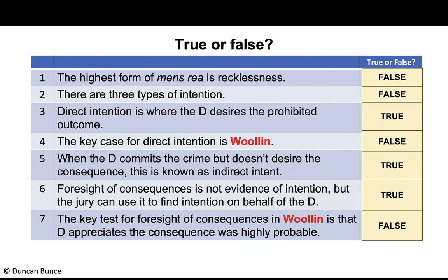If the standard were 'highly probable', the threshold would be much lower and far more people would be convicted of serious crimes — potentially unjustly — and face serious consequences such as mandatory life sentences.